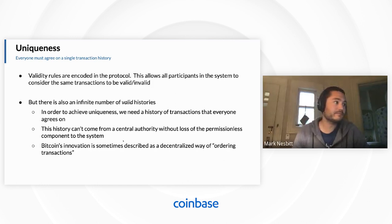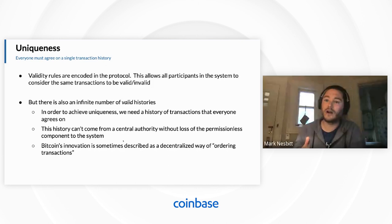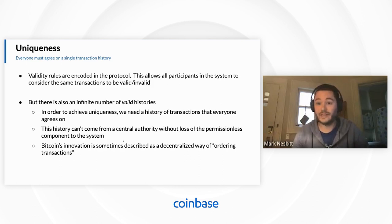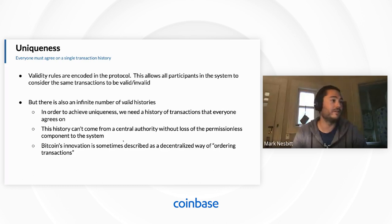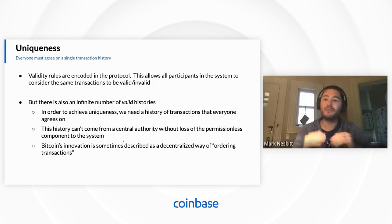Everyone has to agree on the history of transactions, but we can't have this come from a central authority without losing the permissionless component we've gone to all this trouble with public keys to create. In the case of your bank or PayPal, this is how we have a unique history — PayPal says it's the history, they keep track of one, they update it, they're the stewards of it, and we trust them. But the permissionless nature would be lost because PayPal is the arbiter of the system. Bitcoin's innovation is sometimes described as a decentralized way of ordering transactions. If you can place them in order, it's easy to apply validity rules.